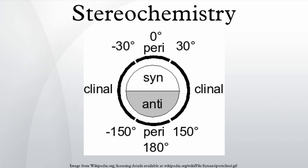Definitions. Many definitions that describe a specific conformer exist, developed by Klyne and Prelog, constituting their Klyne-Prelog system of nomenclature. A torsion angle of ±60° is called gauche; a torsion angle between 0° and ±90° is called syn; a torsion angle between ±90° and 180° is called anti; a torsion angle between 30° and 150° or between -30° and -150° is called clinal; a torsion angle between 0° and 30° or 150° and 180° is called periplanar.